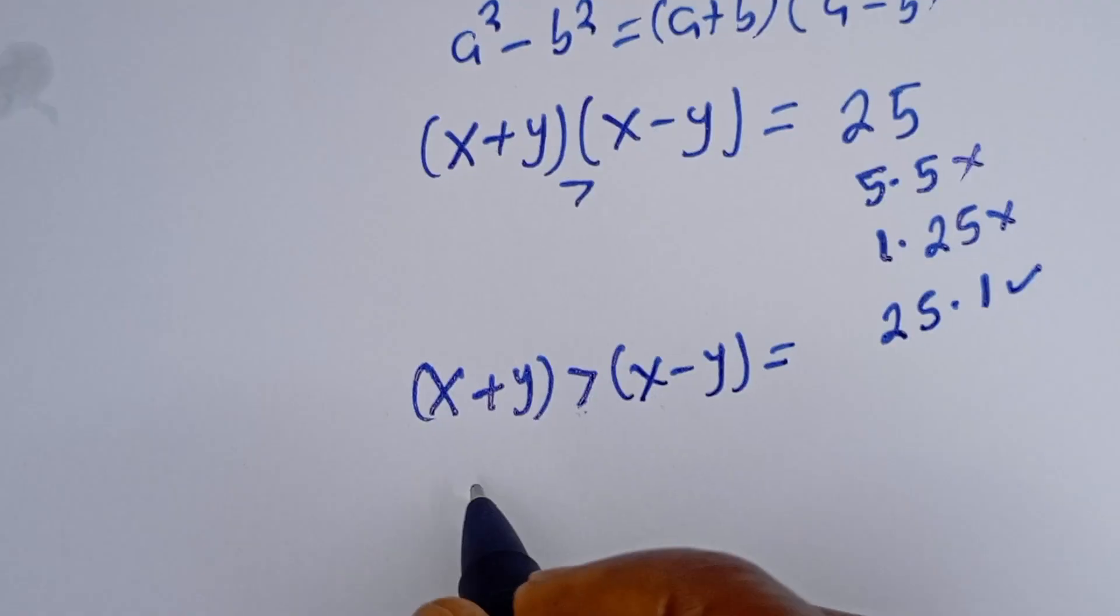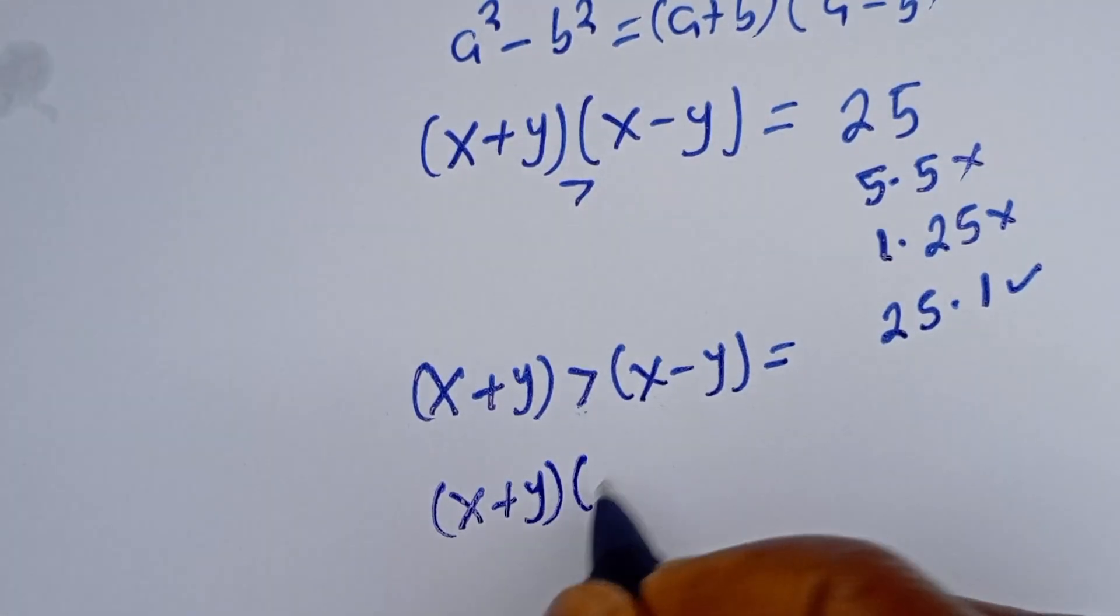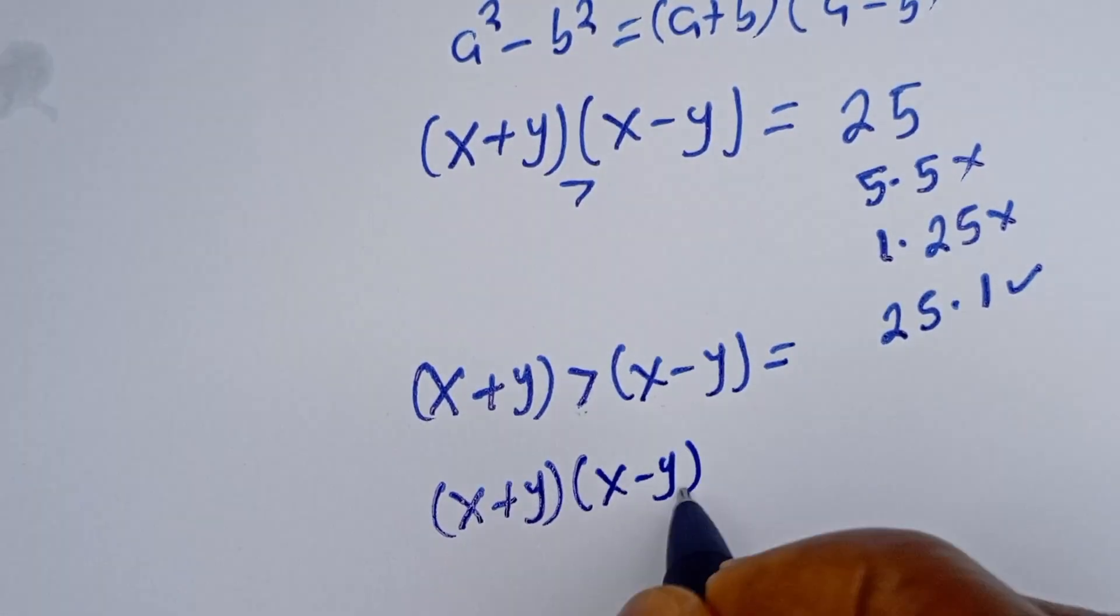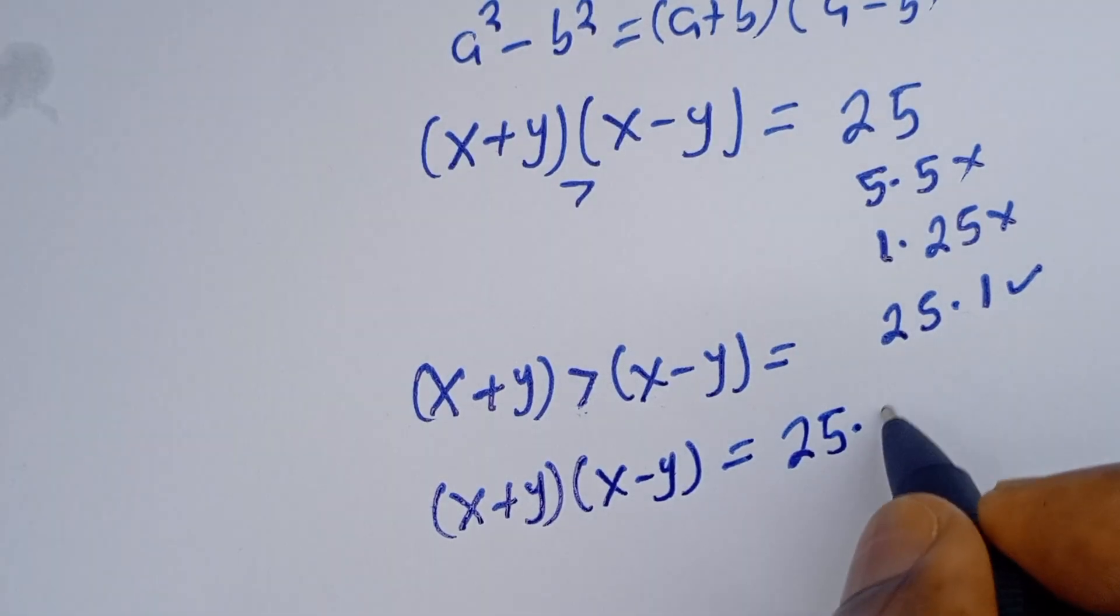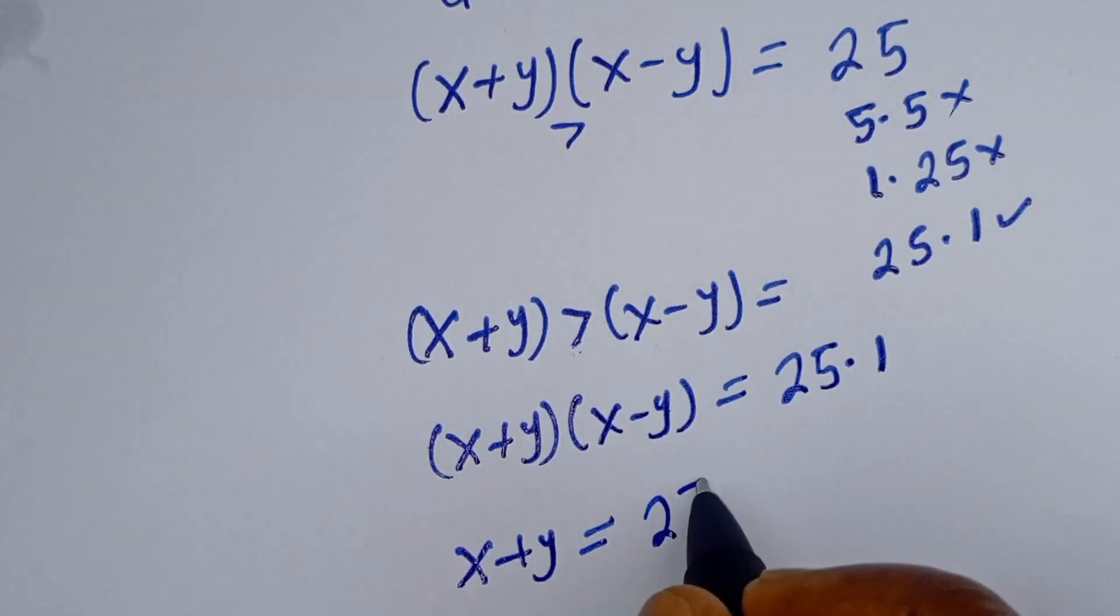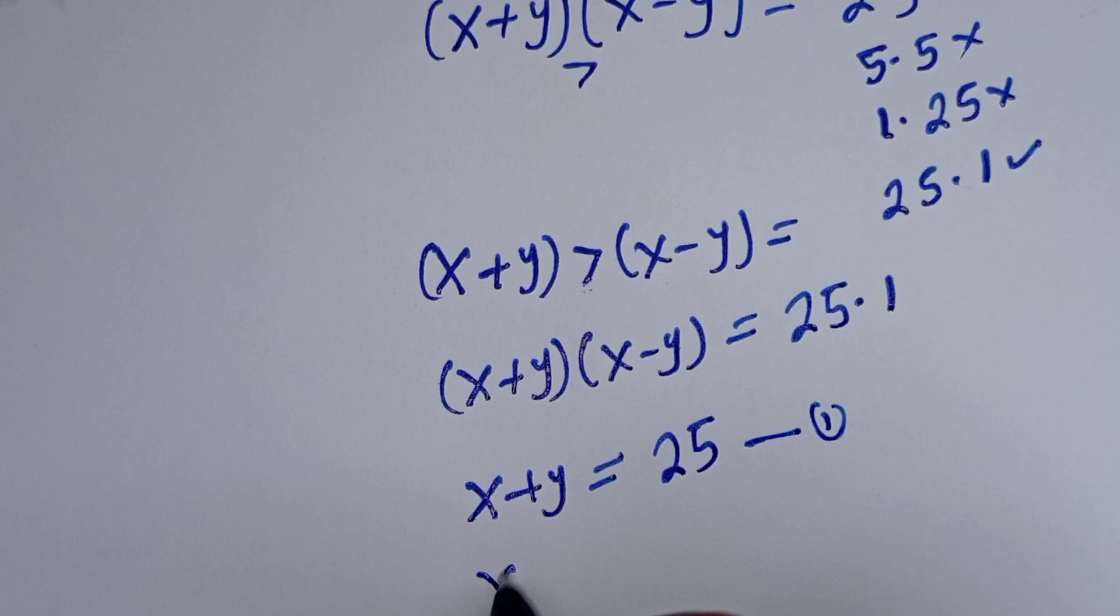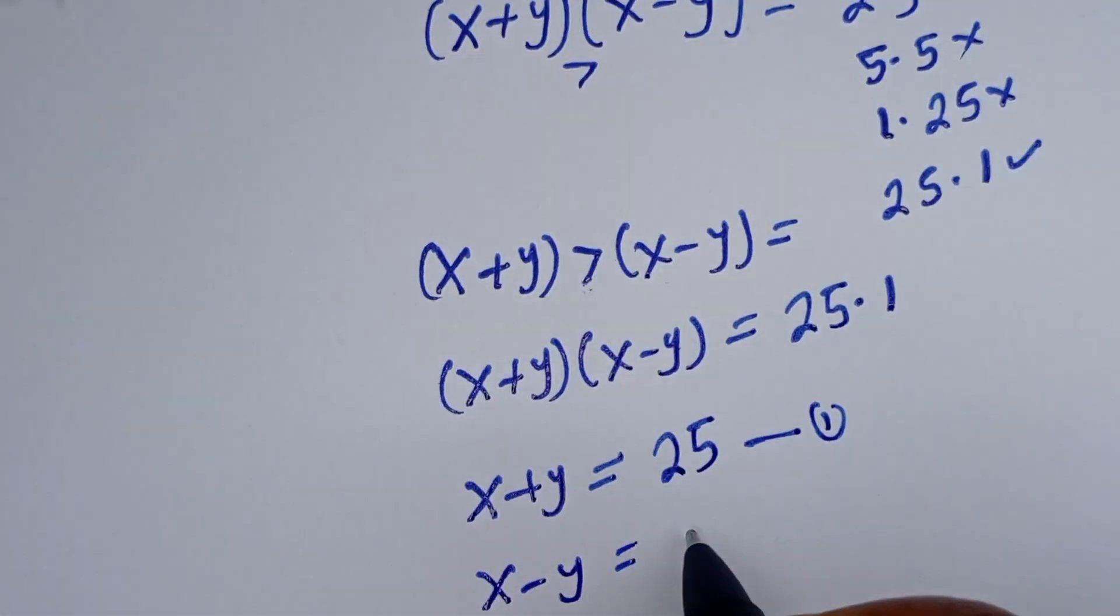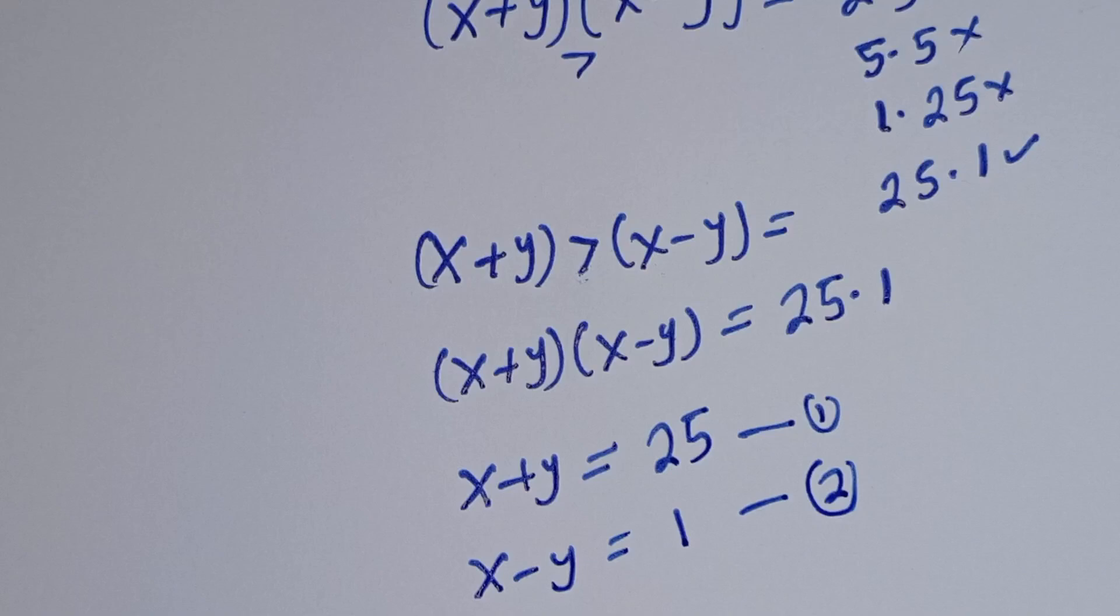So we have X plus Y times X minus Y equals 25 times 1. Then X plus Y equals 25, let's call this equation 1, and X minus Y equals 1, let's call this equation 2.